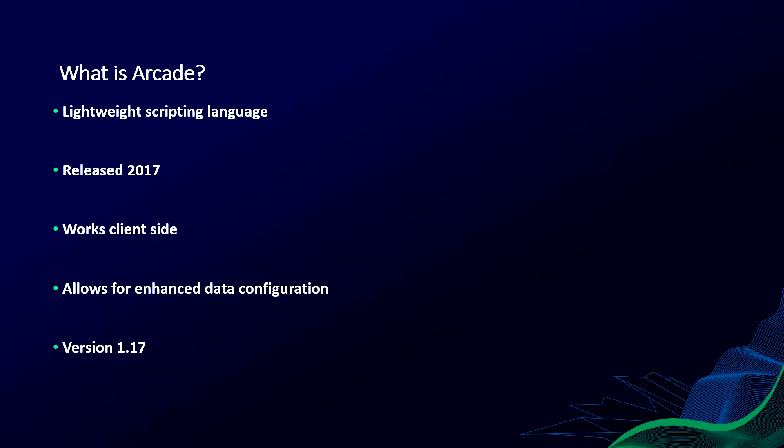So let's begin with: what is Arcade? Arcade is a lightweight scripting language that's available across the ArcGIS system, from desktop to online to mobile. It was developed by Esri and released in 2017 to meet the needs of the ArcGIS system that other languages couldn't. It works client-side, so it performs really well and doesn't need any extra infrastructure behind it to work. This is not a language that you build applications with — it's a language that allows you to do enhanced data configuration so you can really shape it for your needs. It's currently on version 1.17 and has the same release cycle as ArcGIS Online, so keep an eye out for even more functionality to come.